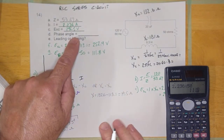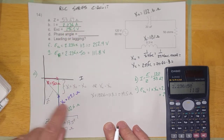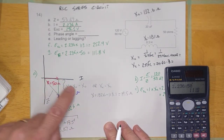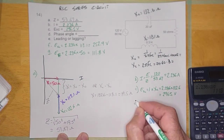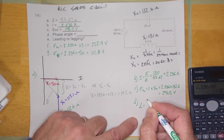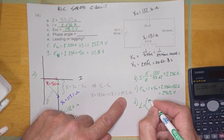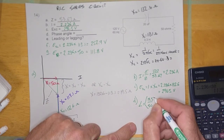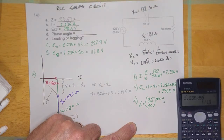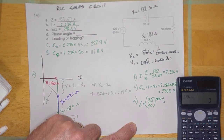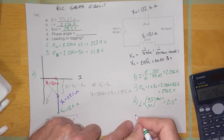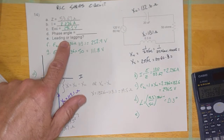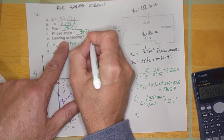The phase angle — I can see it right there. It is going to be inverse tangent of opposite over adjacent. The phase angle is the inverse tangent of X over R, which is 19.5 divided by 50. Shift tan gives us 21.3 degrees.